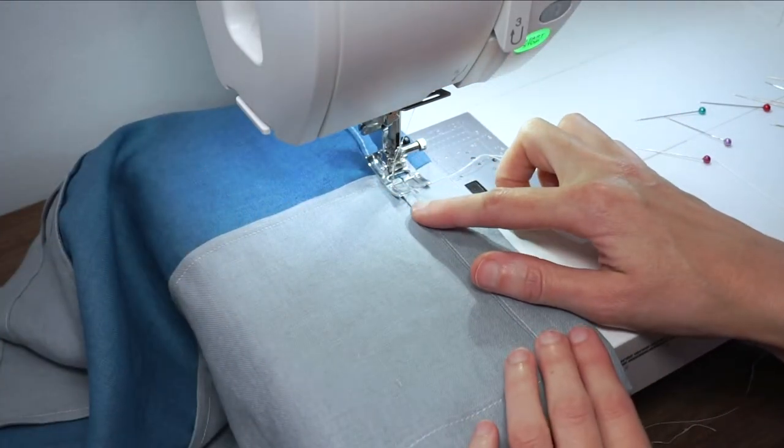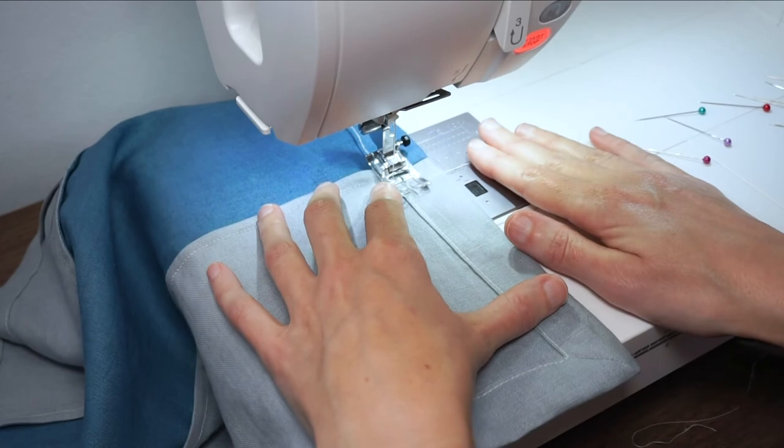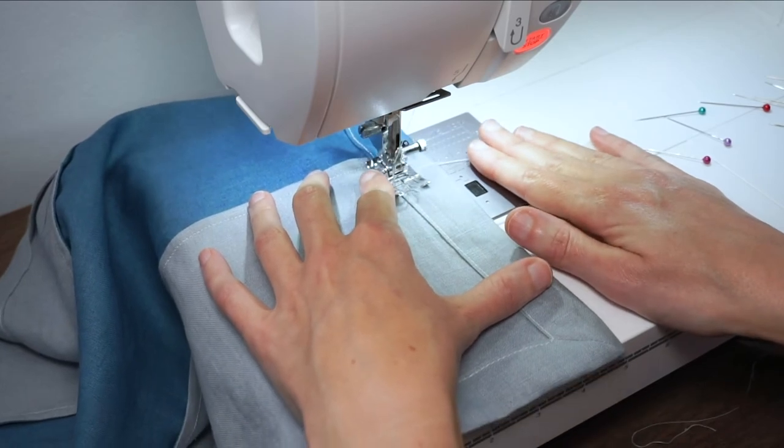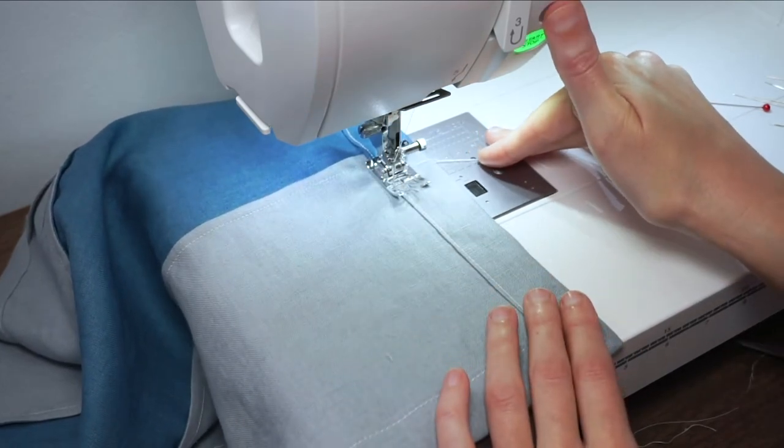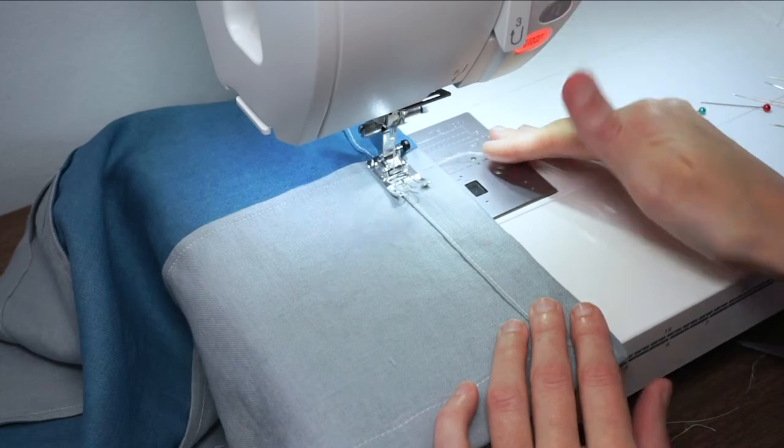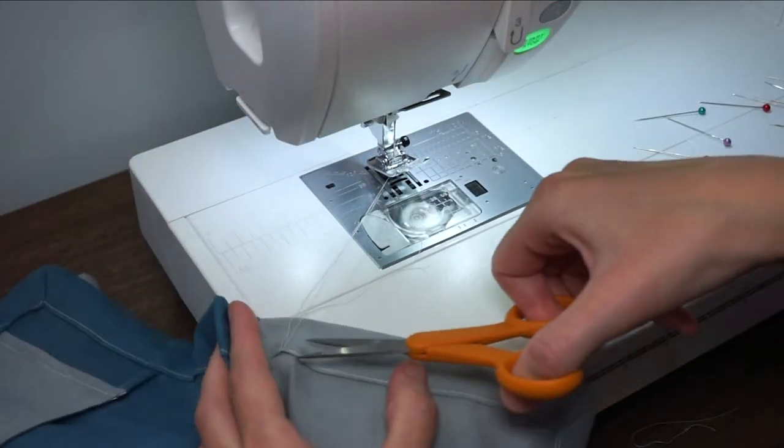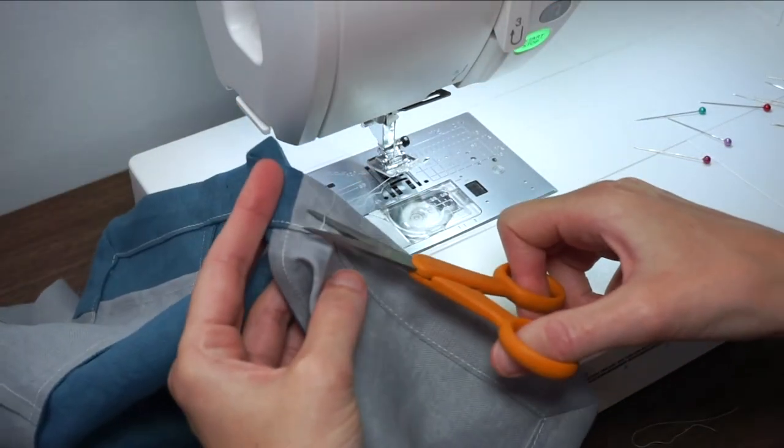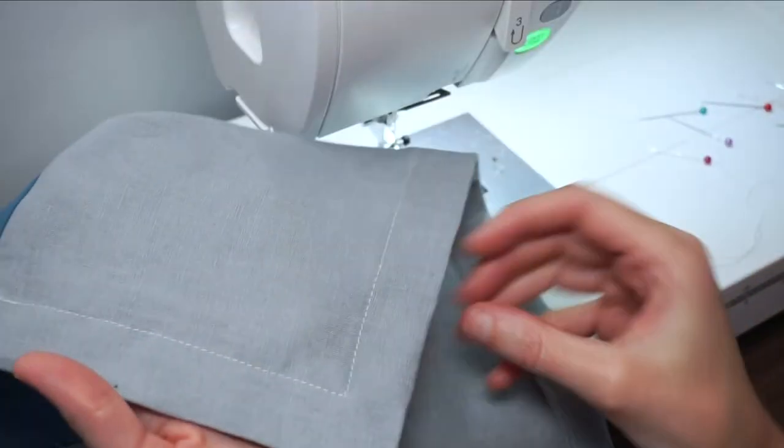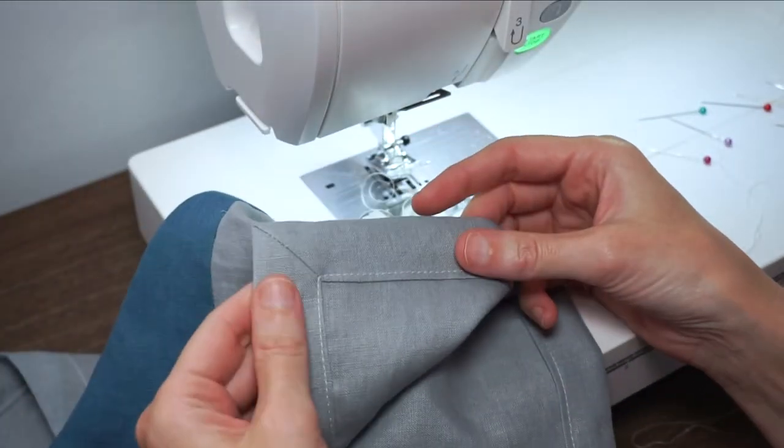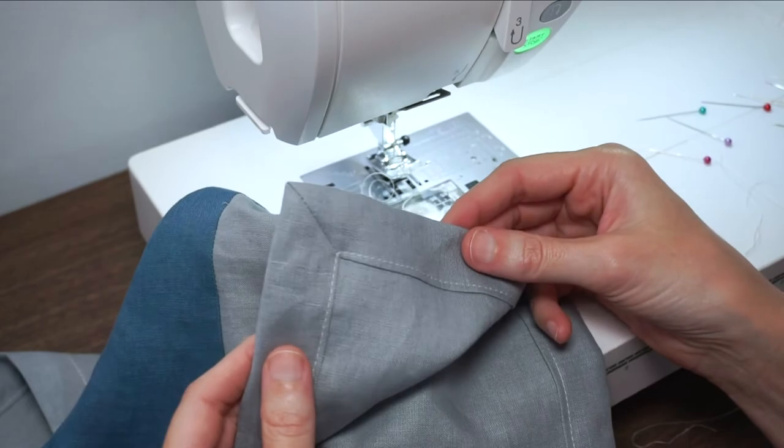Okay, and then when you get back to where you started just meet up with that other line of stitching and do a little back stitch. And then you can just trim your threads and you're all done. You have a nice little napkin with mitered corners that you can use and reuse.